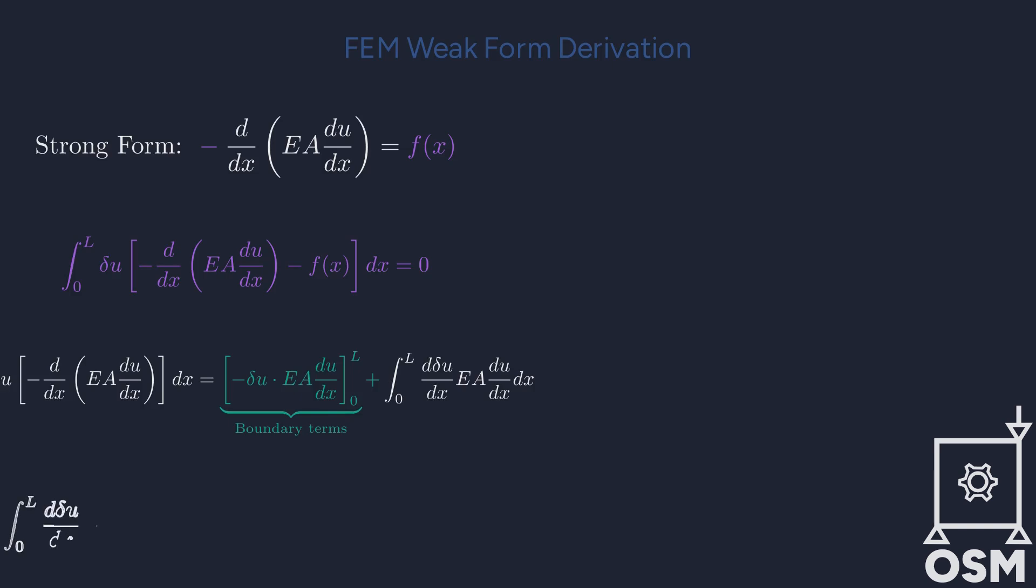Substituting shape functions into the weak form gives us the discrete element equations. The final system is ku equals f, where k is the global stiffness matrix and f contains body forces and tractions. This displacement-based formulation is widely used for bars, rods and axial members.